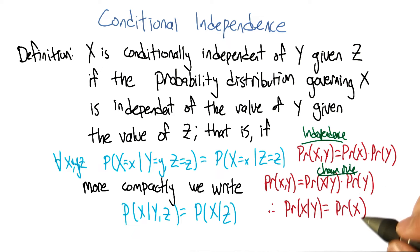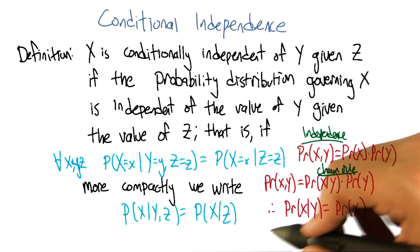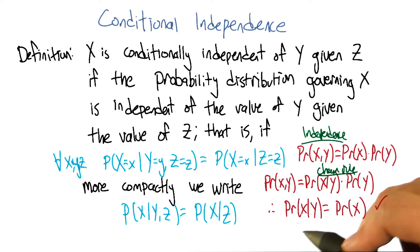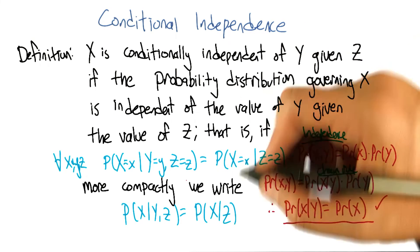So it looks just like the equation you wrote down for conditional independence. Right, the only thing that we added is this notion that it might be the case that we don't have such a strong property as this, where it's always the case that you can write the probability of X given Y just with the probability of X. But in the context of knowing some value Z, it might be true. And that's what conditional independence gives us.